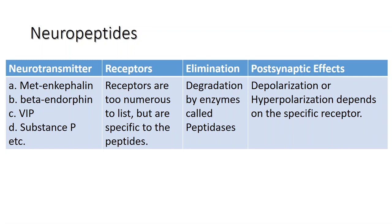Endorphins are released in the so-called runner's high — a brief, deeply relaxing state with a sense of extreme joy or delight that occurs after intense or lengthy exercise. Enkephalin activity increases dramatically in pregnant women during labour. There is also evidence that neuropeptides such as gut-brain peptides are produced by non-neural tissues in the gastrointestinal tract.